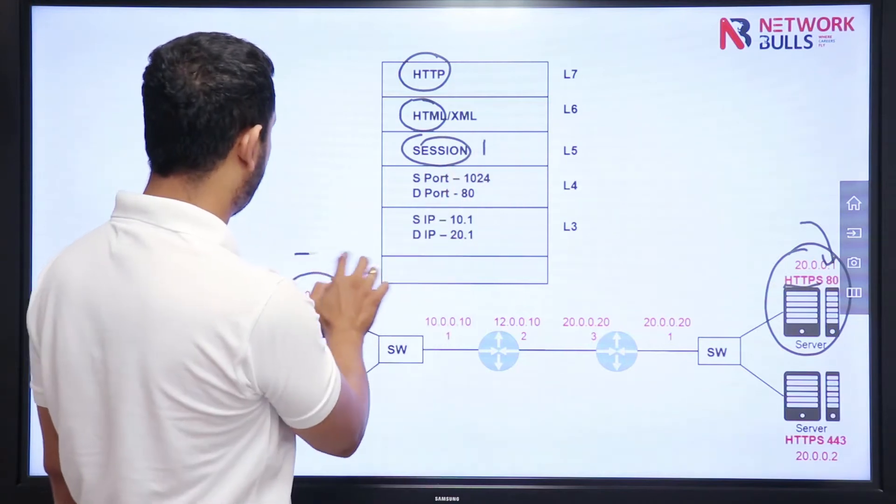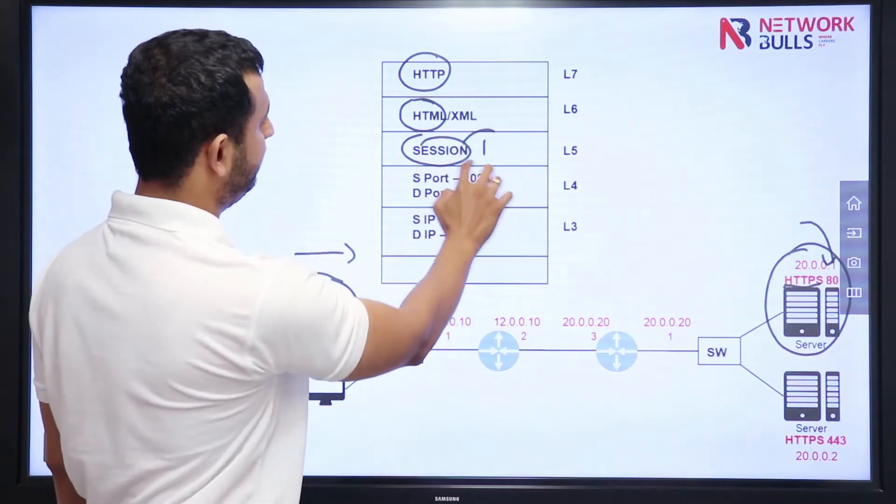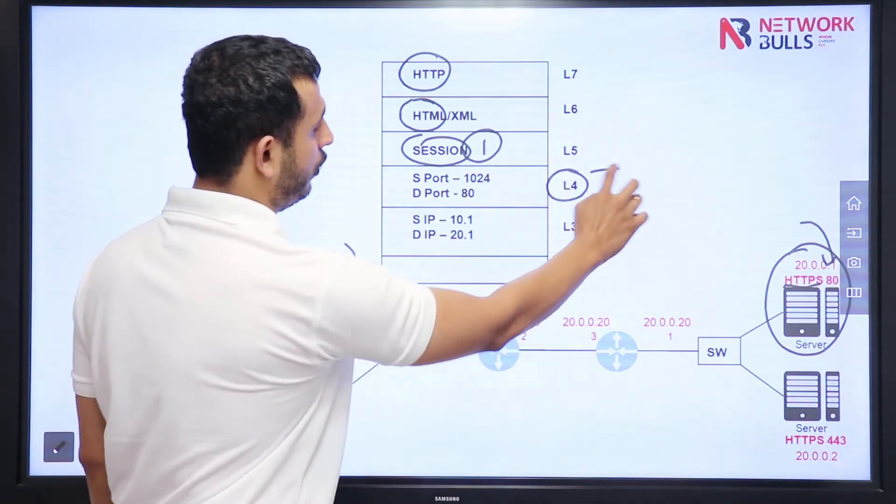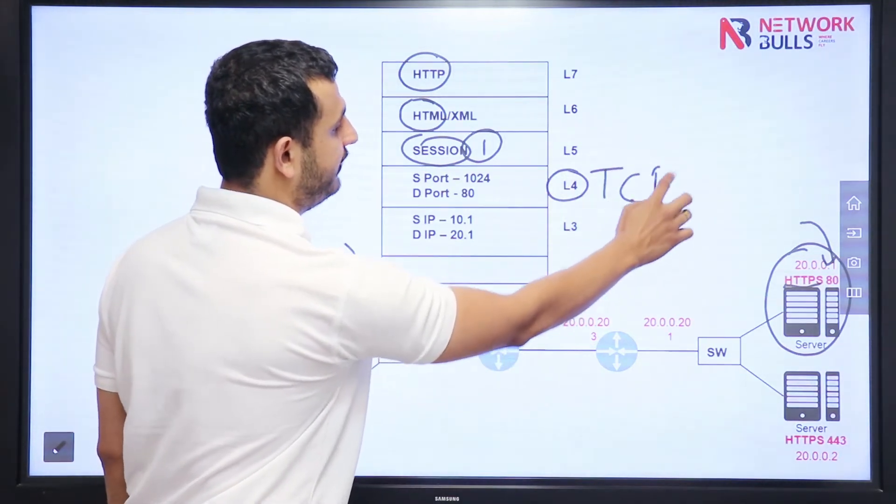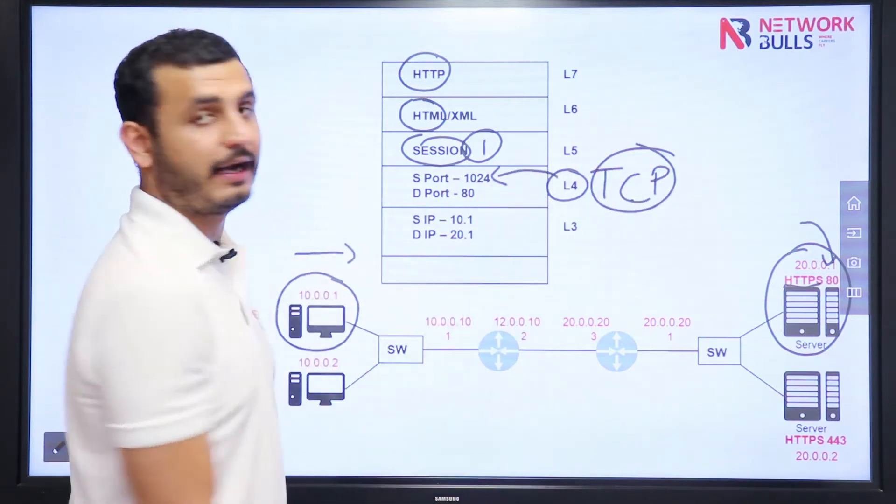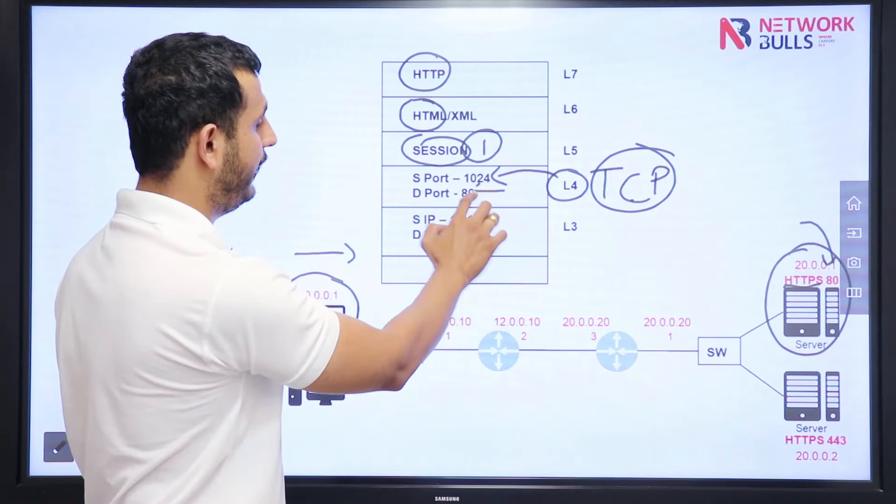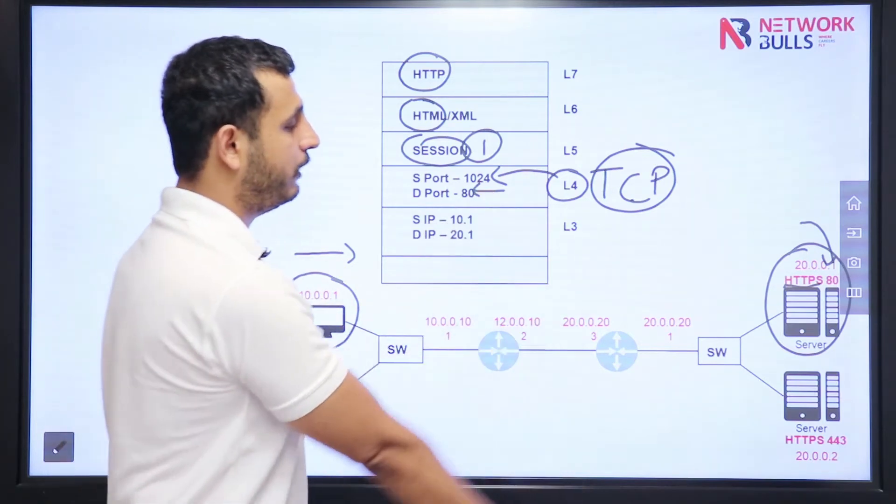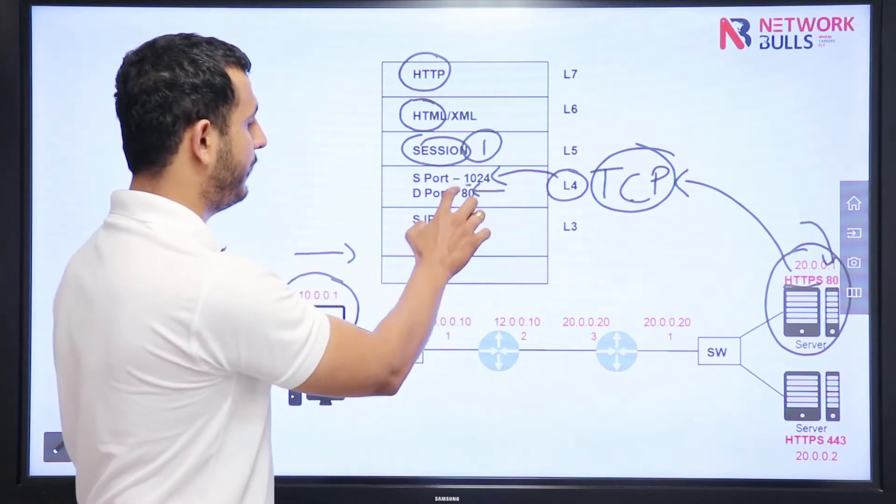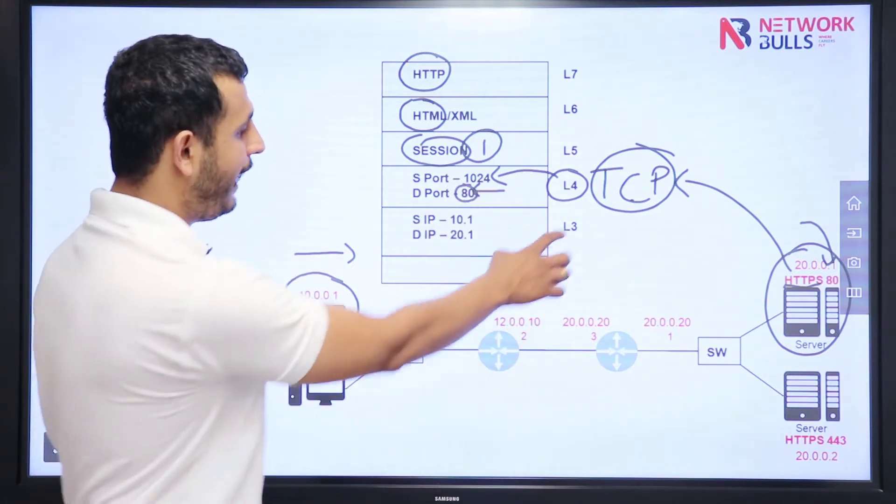Layer 4 is transport layer. Which protocol will be used? TCP. And what will be the port numbers? Source port random and destination will be 80. Why TCP? Because HTTP uses TCP, and for HTTP the port number is 80.